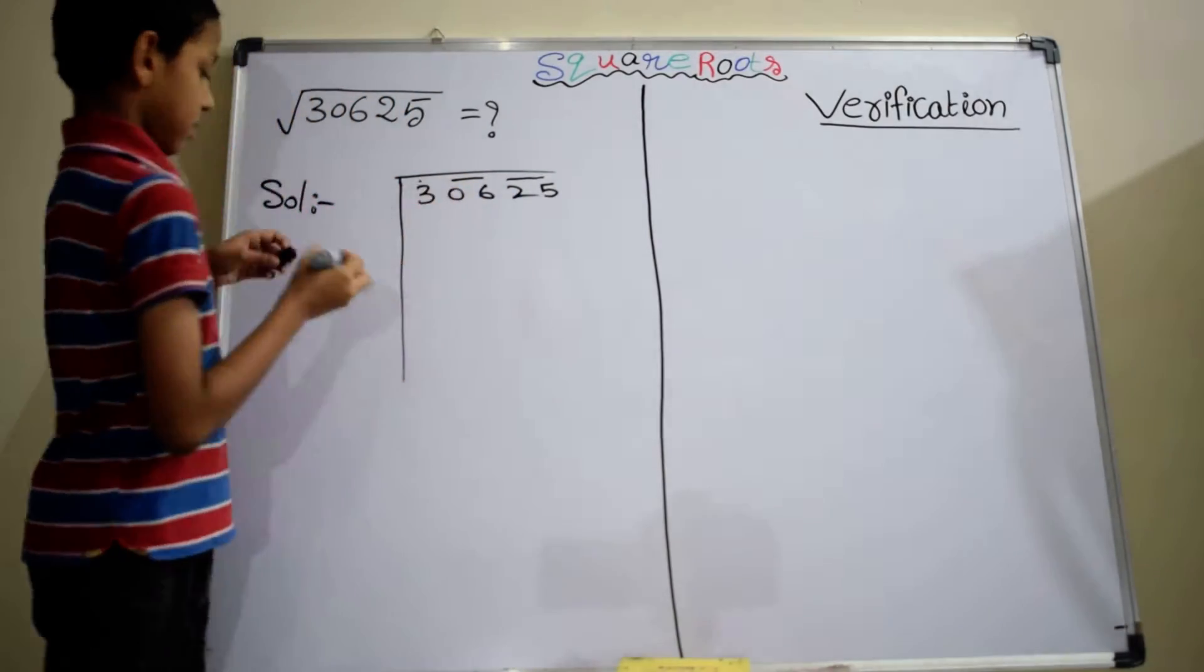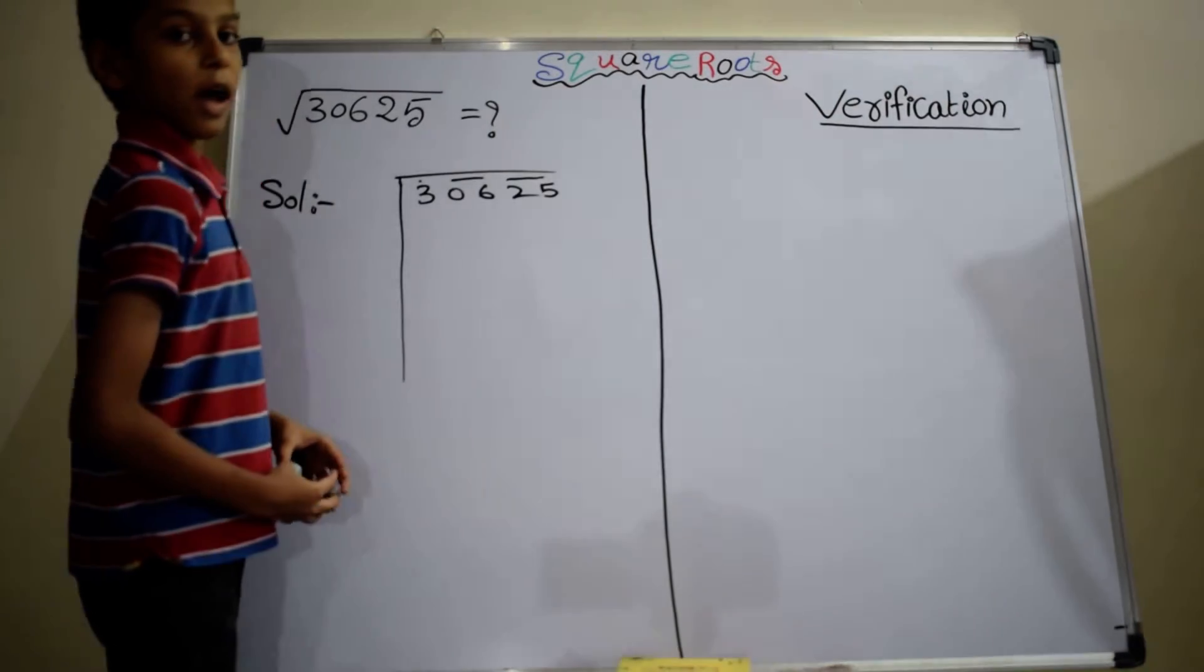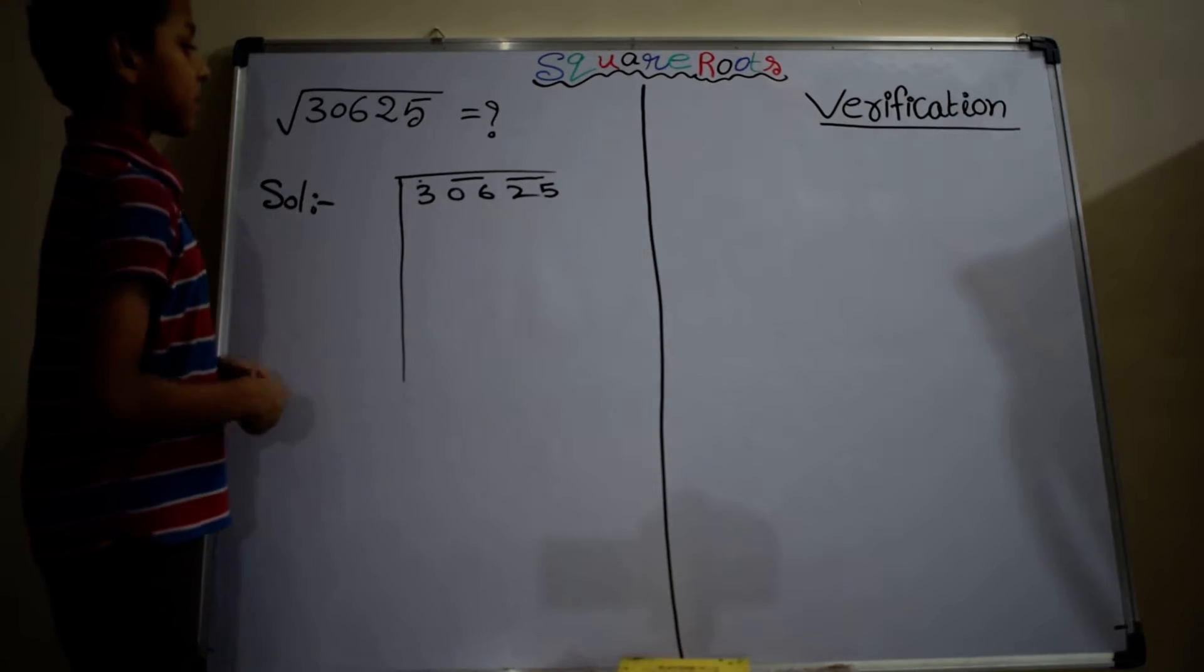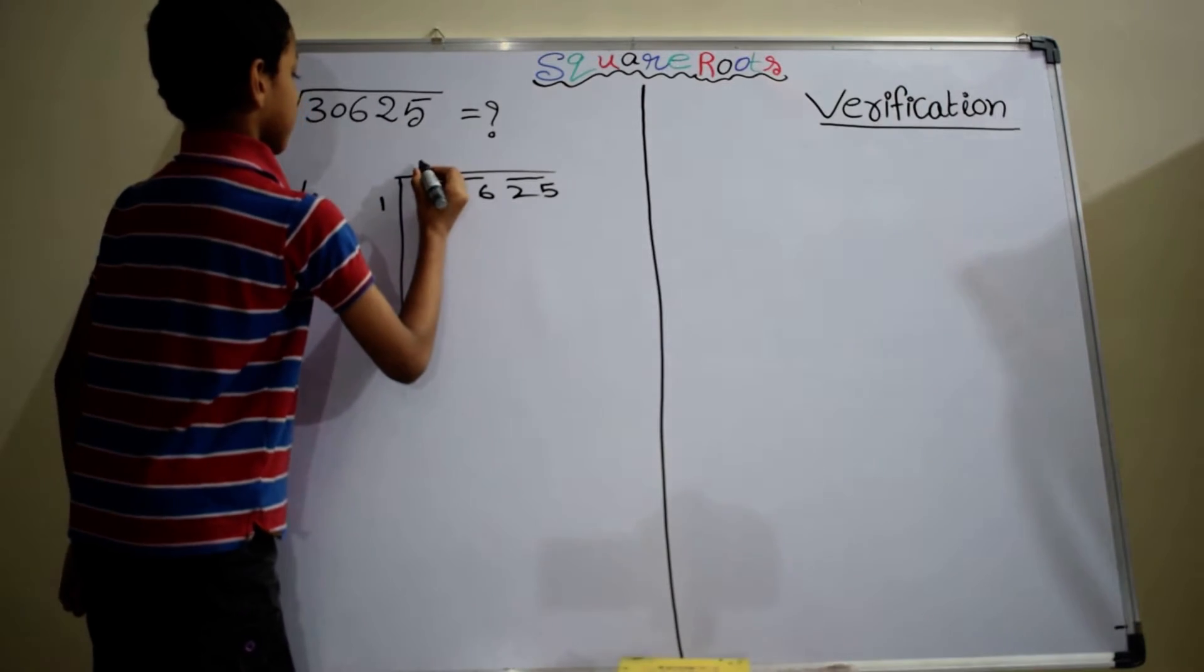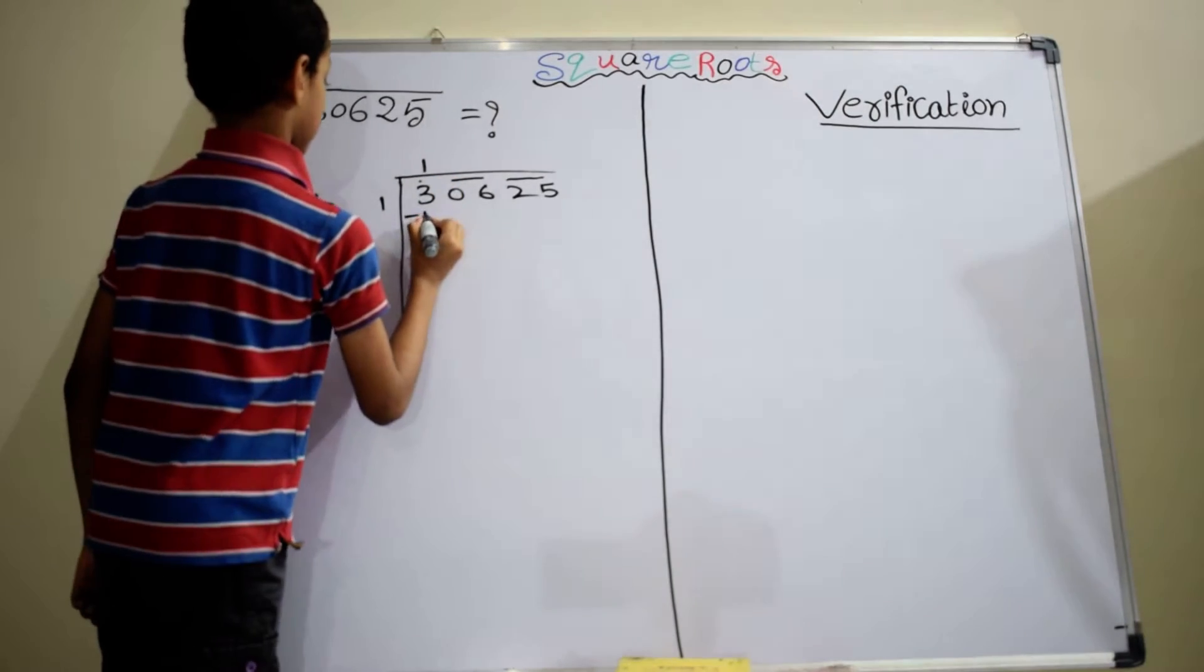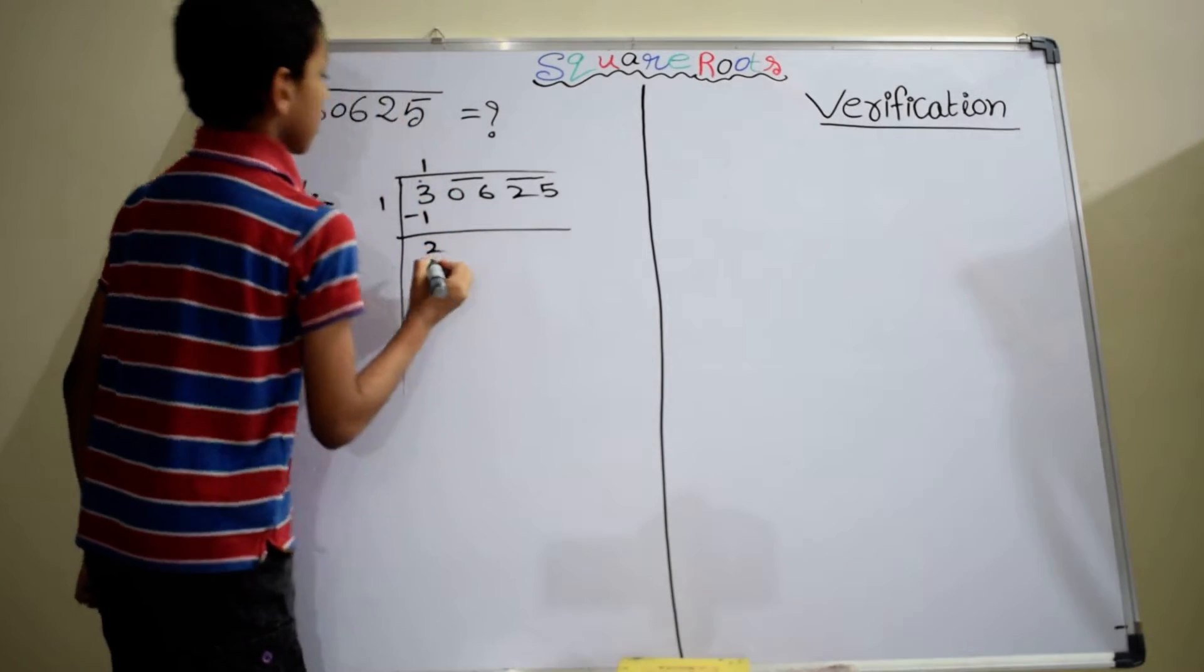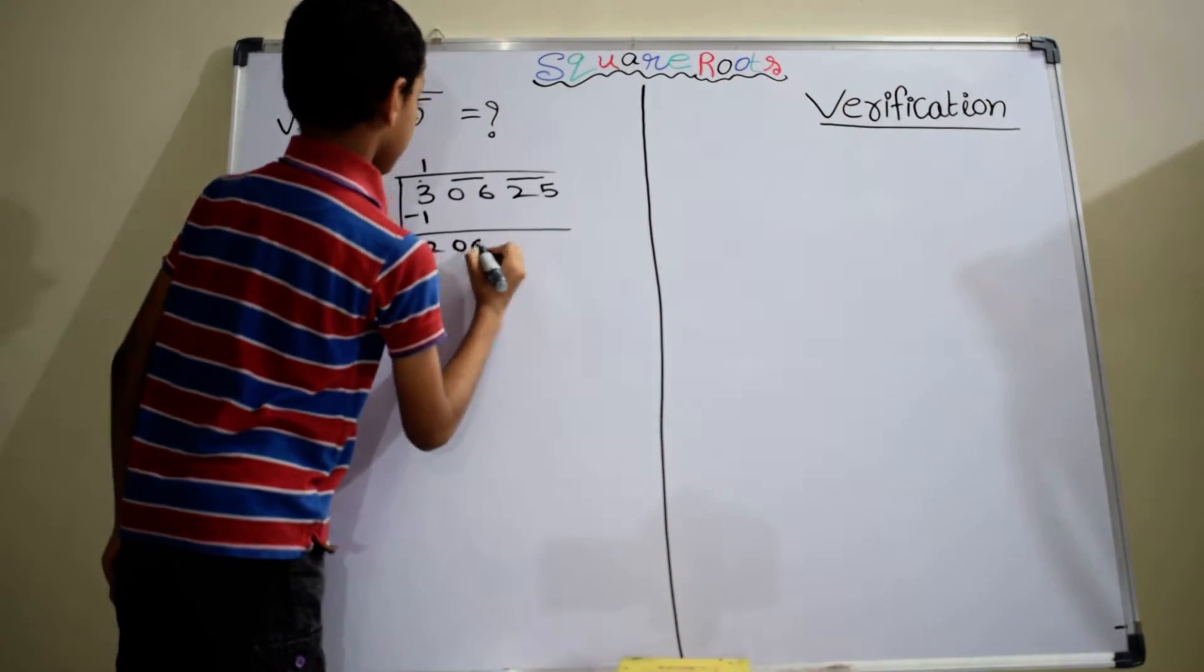Put the term 3. In this step, we have to choose square of any number which is nearby 3. I am taking 1 square. 1 square is 1. 1 is subtracted from 3, bring down the next pair 06.